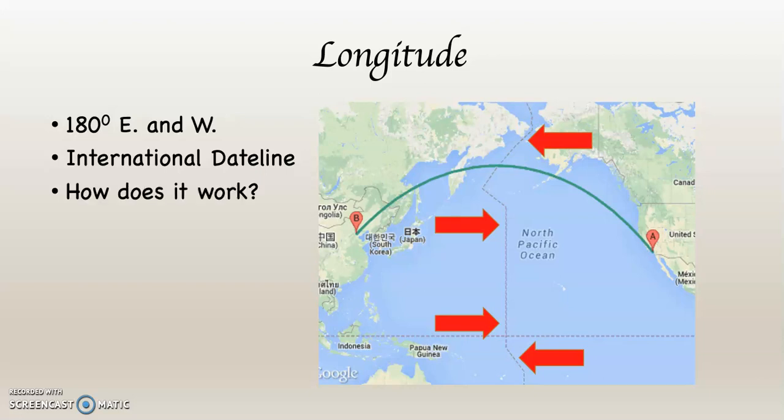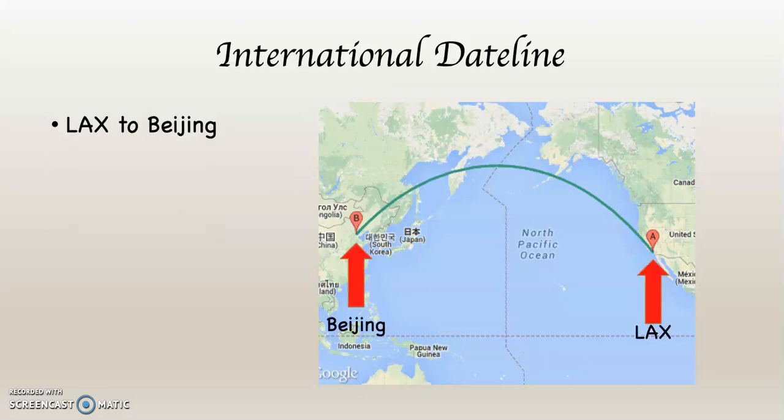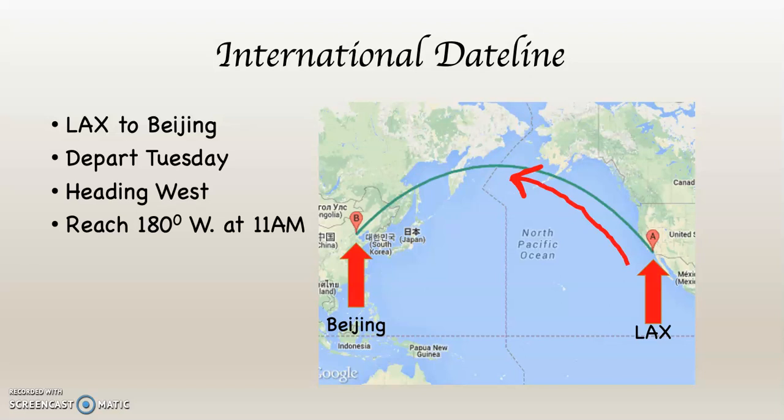How does it work? Let's take a flight together. We're going to fly from LAX — Los Angeles International Airport in Los Angeles, California — to Beijing, which you can see plotted on the map. There's LAX on the right-hand side at A, and Beijing on the left-hand side at B. You can see an arcing green line showing the route that we are going to fly.